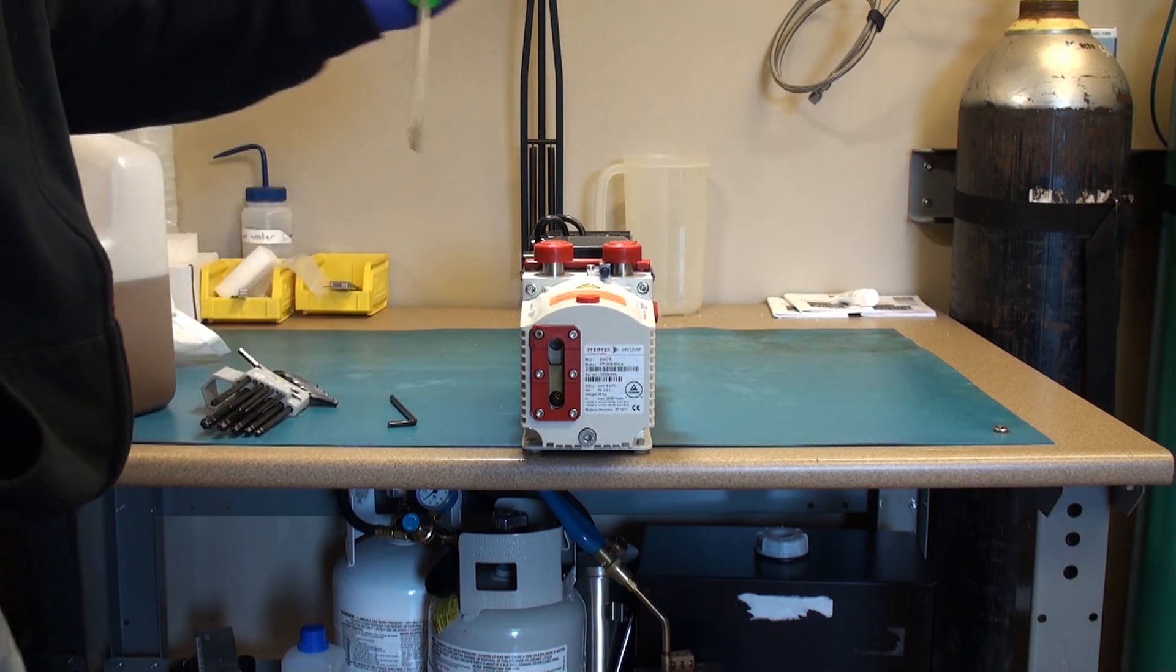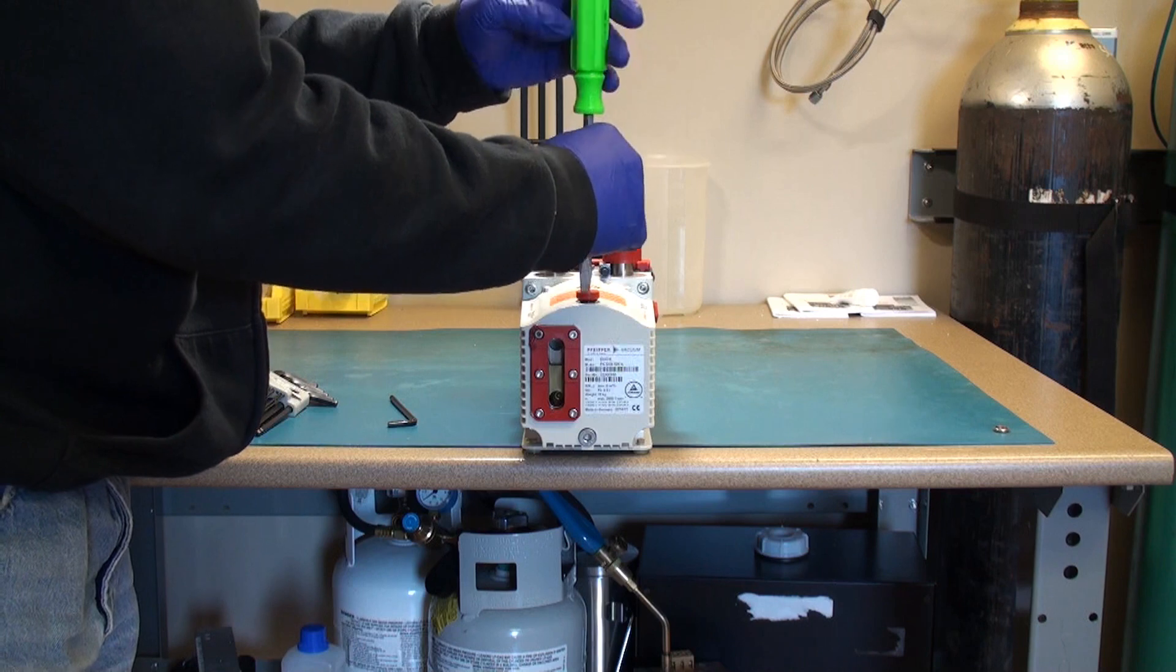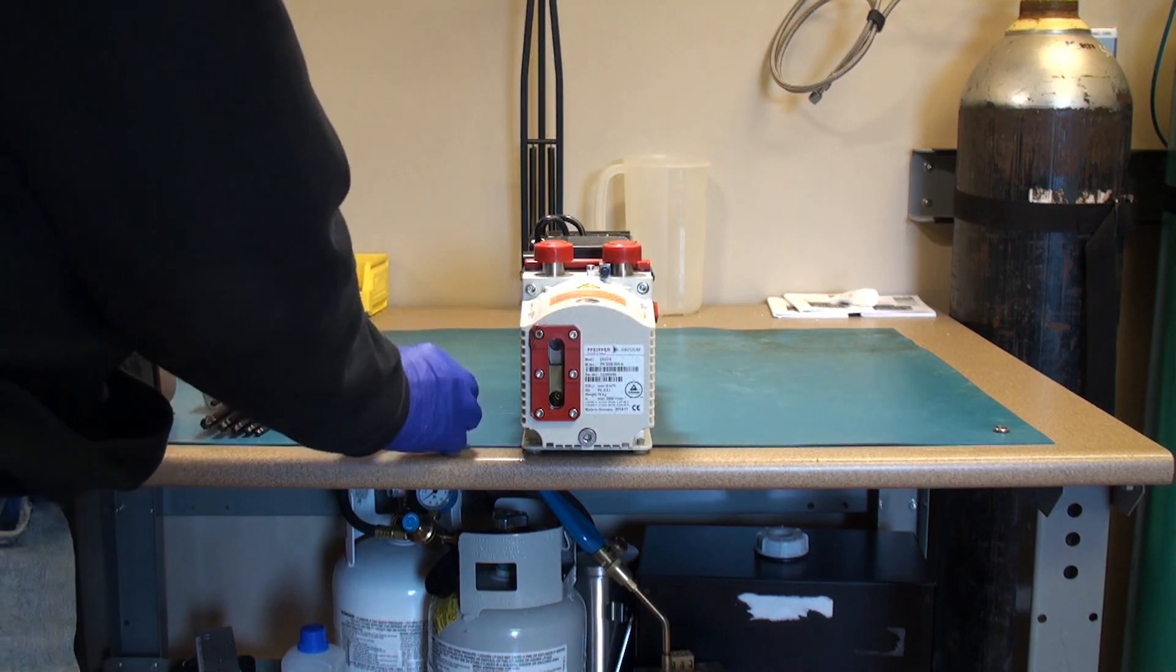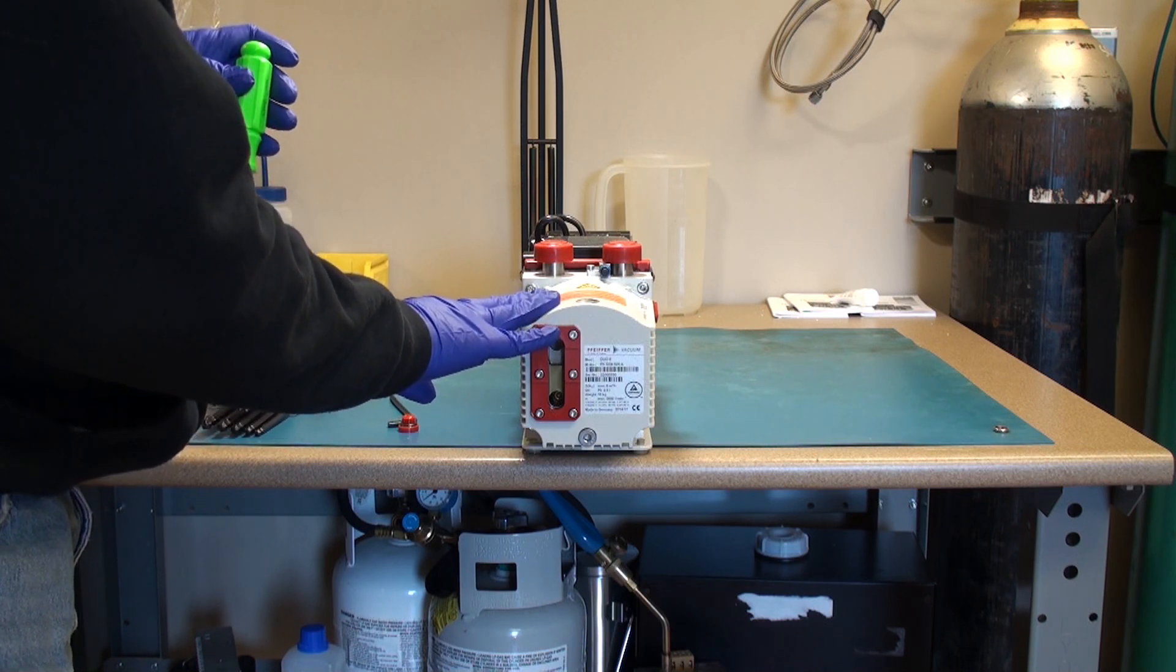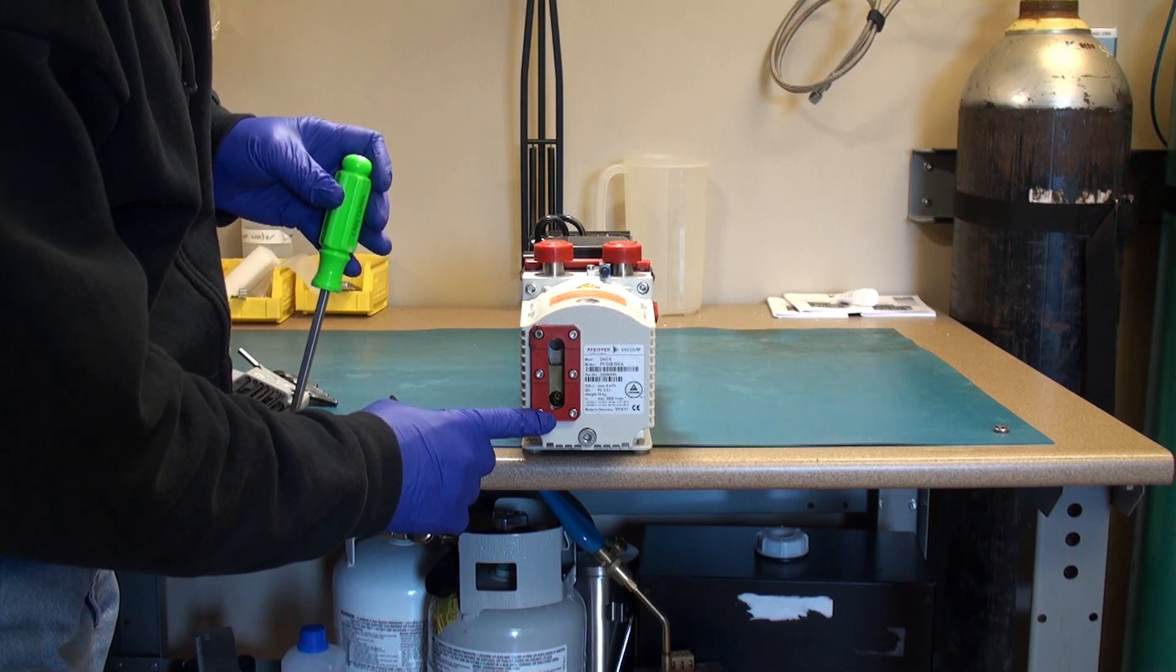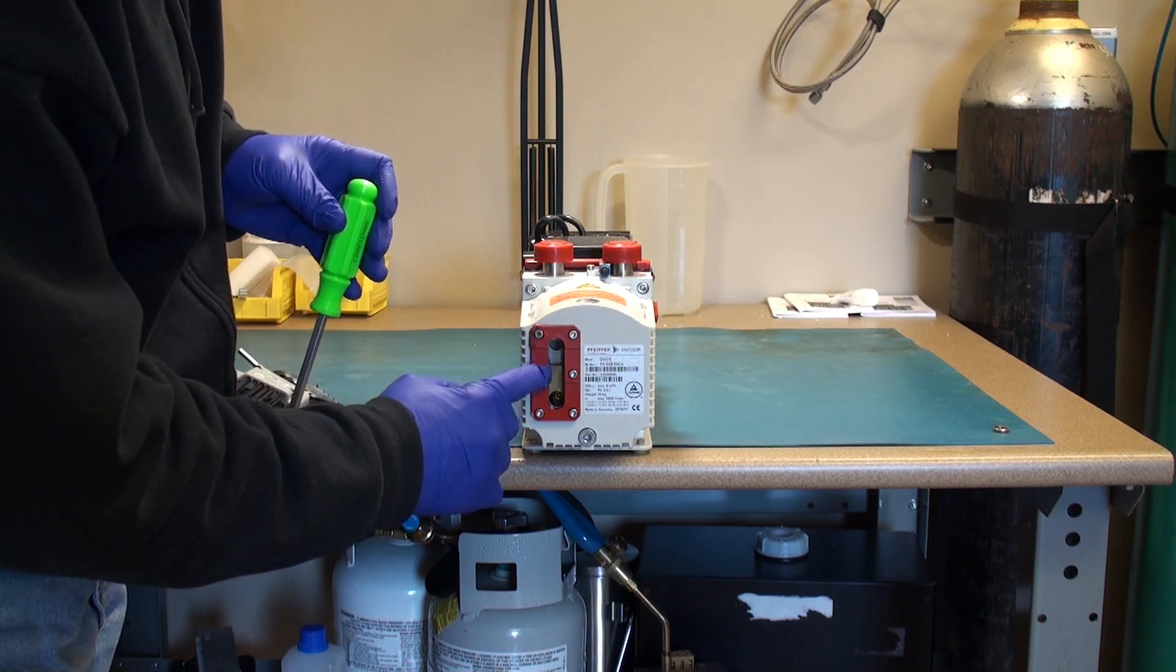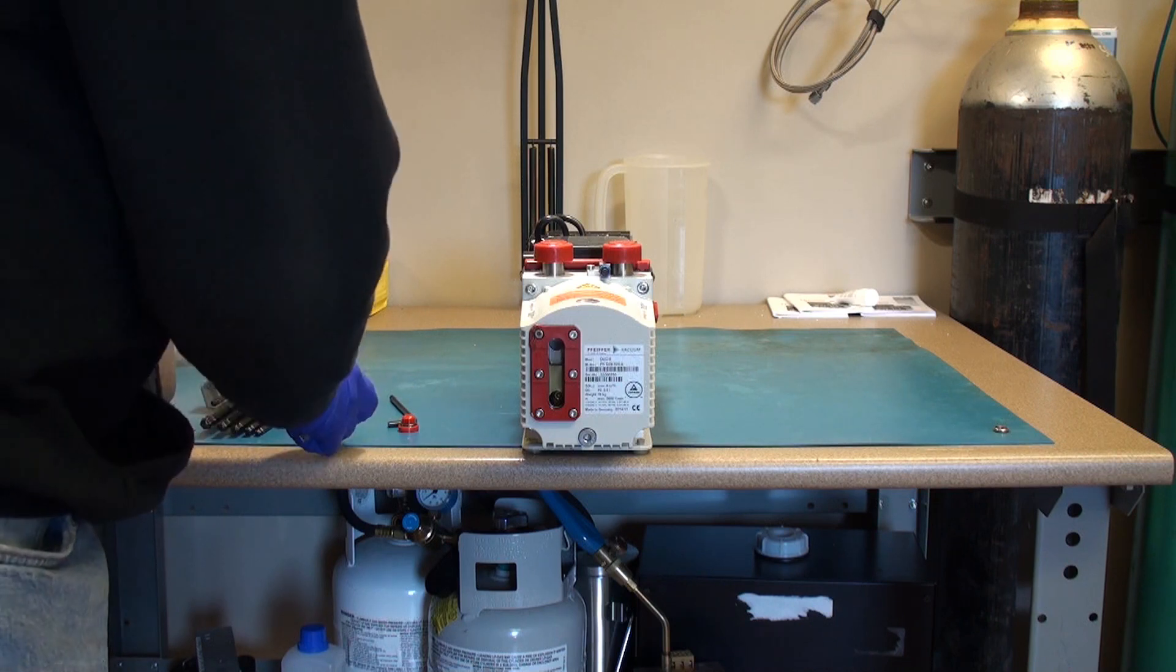First thing you do is you open the fill port on the top of the pumping end of the rotary vane pump. On that part you can see that there's a sight glass. It shows you the oil level.